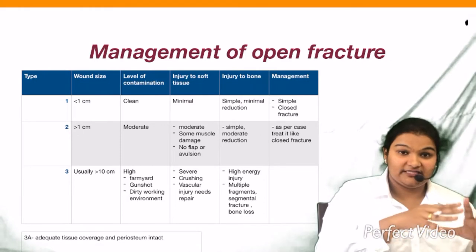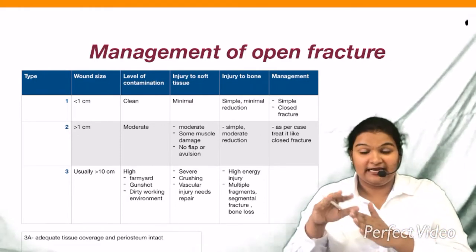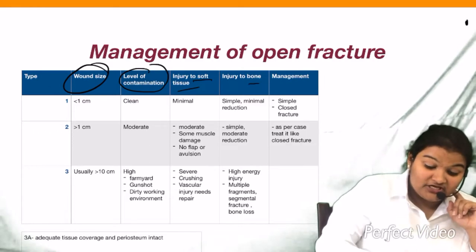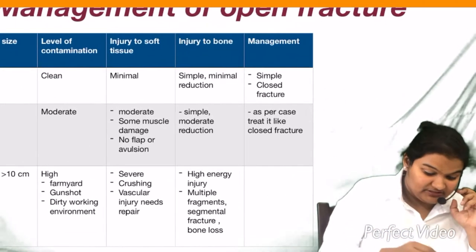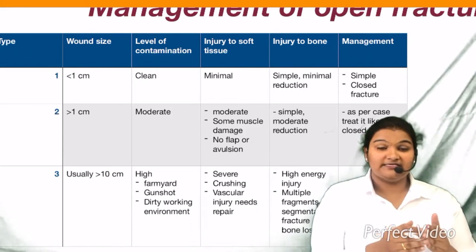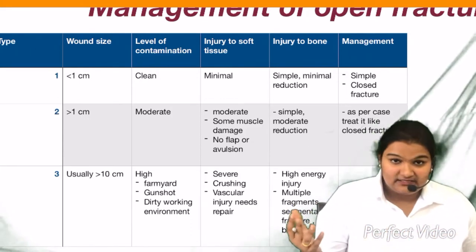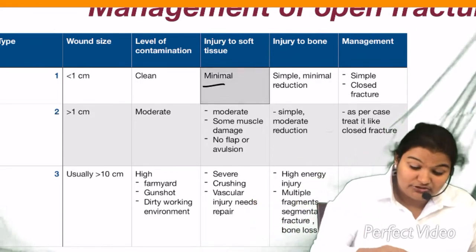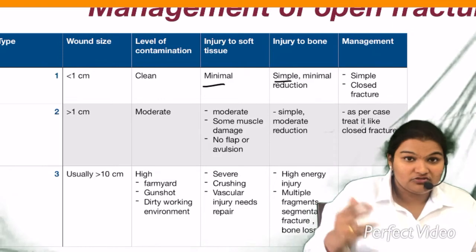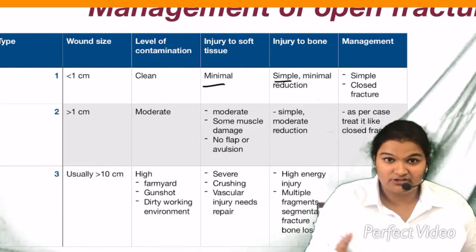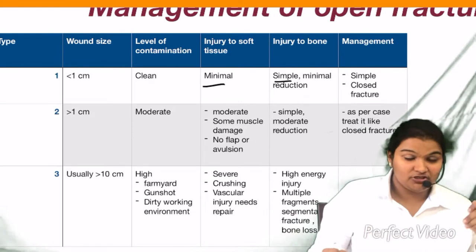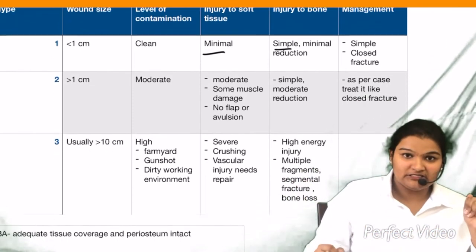You are going to differentiate the open fracture into type 1, type 2, type 3 and further ABC, on the basis of wound size, the level of contamination, the injury to soft tissue and bone, and its line of management. In type 1, the wound size is less than or equal to 1 cm. The wound is clean, there is very less contamination, and the soft tissue injury is minimal — it can be treated with simple stitches. The injury to bone is also minimal; it can be a hairline or very minor fracture treated with simple reduction. You are going to clean the wound, close the wound, and treat it as a closed fracture.